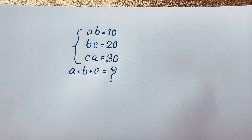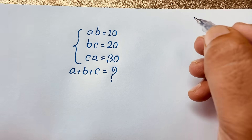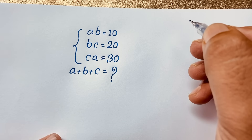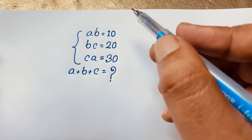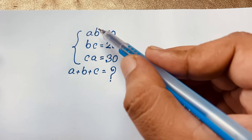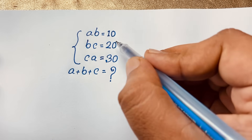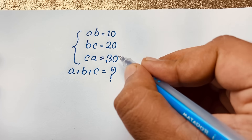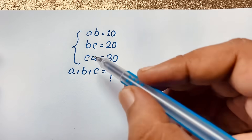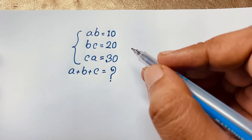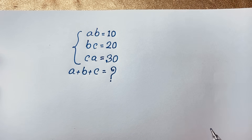Hello everyone, welcome to Russell's Classroom. Today we'll solve a nice math Olympiad question. This question has AB equal to 10, BC equal to 20, and CA equal to 30. We'll find out what is the value of A plus B plus C.